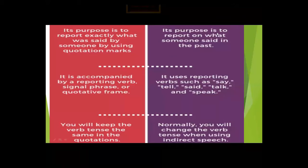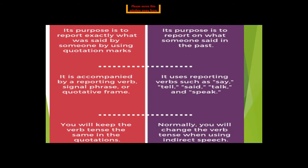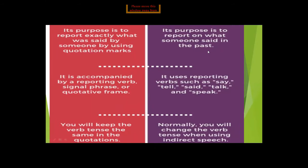The purpose of indirect narration is to report what someone said in the past. When someone has said something, that becomes past, so we make some changes and narrate the actual message. We do not change what someone has said, but we make changes that do not alter the actual message of the speaker's words.